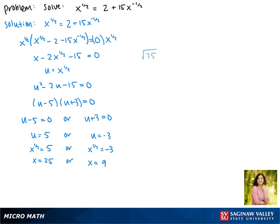Plugging in 25 gives us the square root of 25 equals 2 plus 15 over the square root of 25. This gives us 5 equals 2 plus 15 over 5. This gives us 5 equals 2 plus 3. This is true so 25 is a solution.